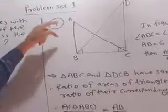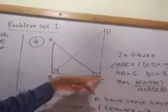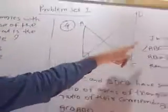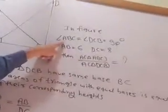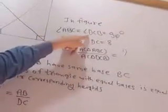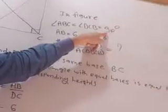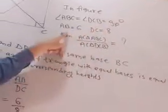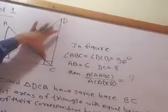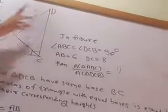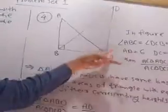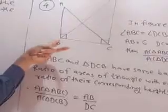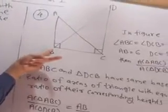Question number 4. Two triangles are given: triangle ABC and triangle DCB, in the figure. Angle ABC equals angle DCB equals 90 degrees. AB equals 6 and DC equals 8. Find the area of triangle ABC upon area of triangle DCB.